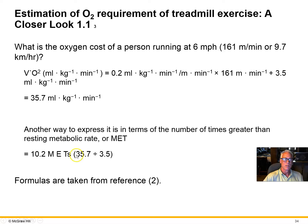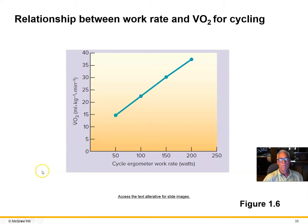It's a very practical and easy thing to do, and that's why you should know how to do these calculations — so your client can be informed about what's needed to accomplish a given outcome in terms of exercise. We can also express 35.7 mL/kg/min in METs: that represents 10.2 METs — obviously quite a bit more energy consumed to run than to walk.